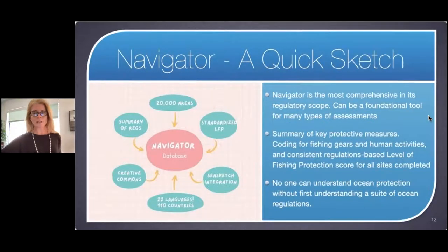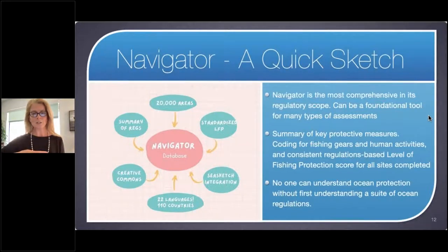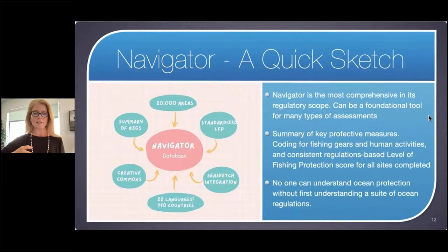I think of the Navigator tool as the Swiss army knife in the toolbox. We've got 20,000 areas mapped, a standardized level of fishing protection score, SeaSketch integration with our partners at UC Santa Barbara, 22 languages, 110 countries, it's in the Creative Commons, and there's a summary of regulations. No one can understand ocean protection without first understanding the suite of ocean regulations.